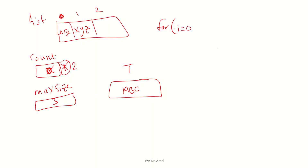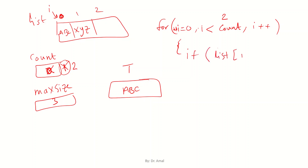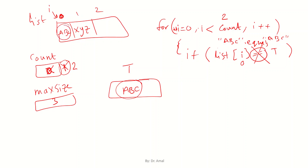We write a for loop starting from i equals 0, with i less than count, and i++. The first time i is 0, we check if list[i] — which is list[0] containing 'abc' — has the same value as t. Since we cannot use double equals for Strings, we use .equals() or .equalsIgnoreCase(). If the values match, we return true immediately and exit the for loop.